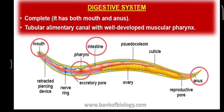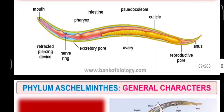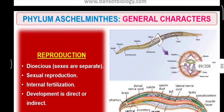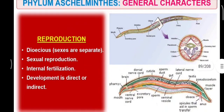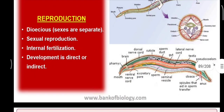The reproductive system is also well developed in this phylum. However, the respiratory system is absent in these animals, and there is no specialized circulatory system either. These are dioecious organisms, meaning male and female animals are differentiated and sexes are separate. Reproduction is sexual; fertilization is internal and development is direct, though some animals also have indirect development with larval forms present.